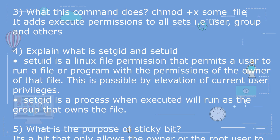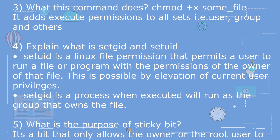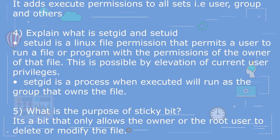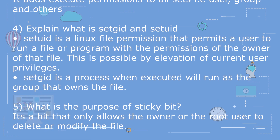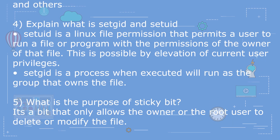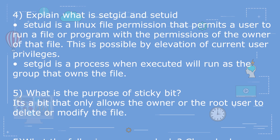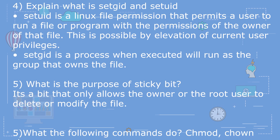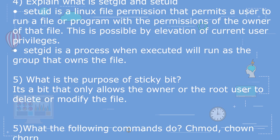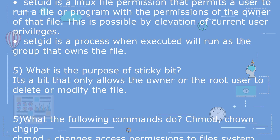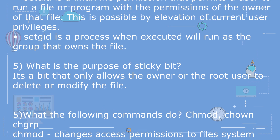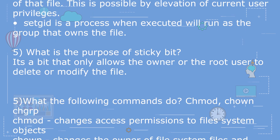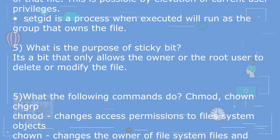Question 4: Explain what setgid and setuid are. Setuid is a Linux file permission that permits a user to run a file or program with the permissions of the owner of that file. This is possible by elevation of current user privileges. Setgid is a process that, when executed, will run as the group that owns the file.